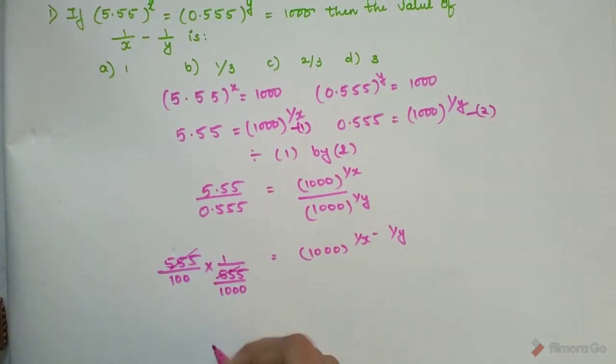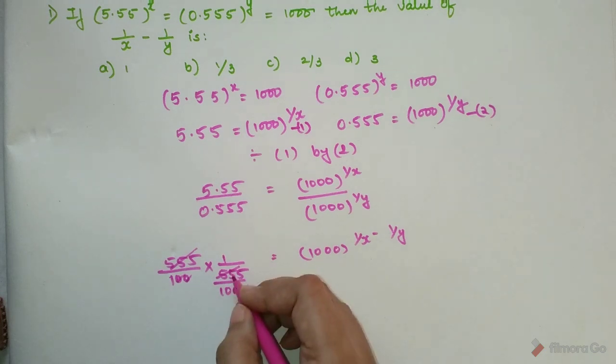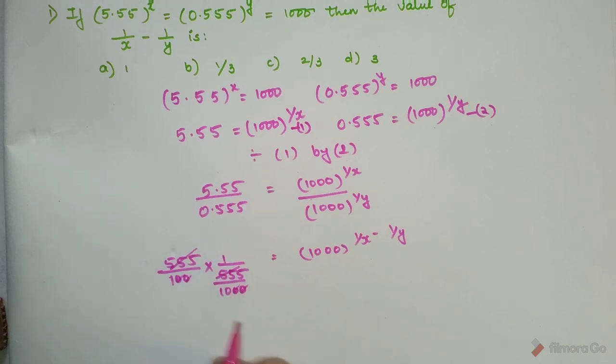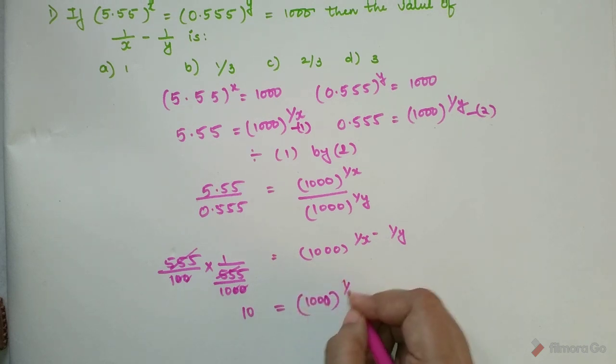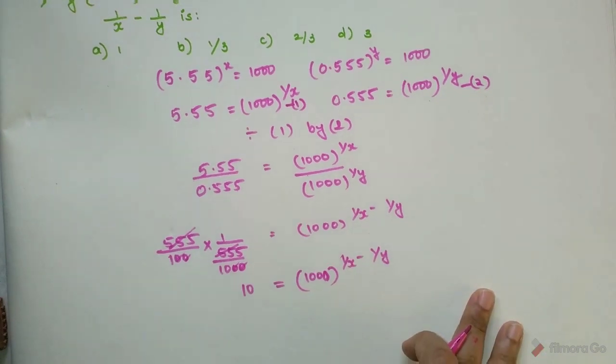Now this and this gets cancelled, this and this gets cancelled, these two zeros are getting cancelled. I'm just left with 1 upon a fraction whose denominator is 1/10 basically. So that can be now written as 10 = 1000^(1/x - 1/y).